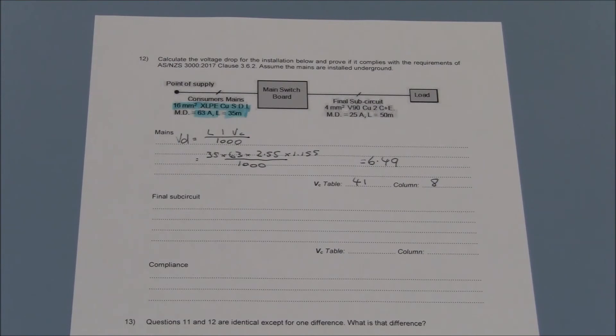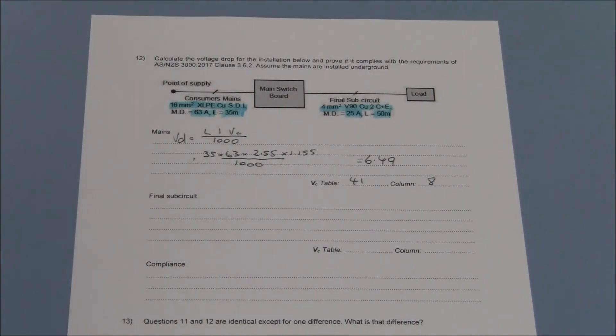Next we will determine the value of voltage drop of the final sub circuit. The cable is a 4mm² 4 core on earth with a maximum demand of 25 amps and a length of 50 metres.